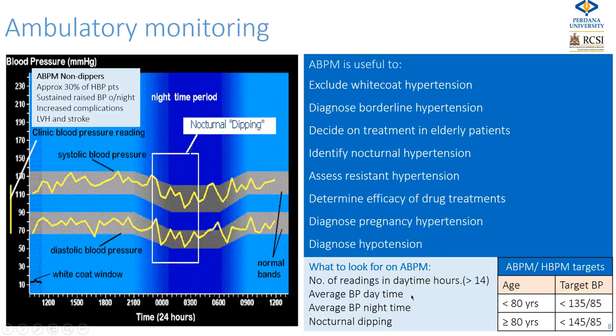The targets for ambulatory monitoring in those aged under 80 is less than 135 over 85, and over 80, less than 145 over 85.